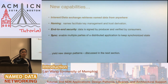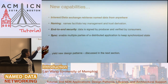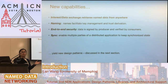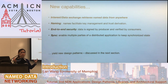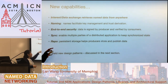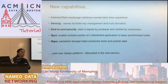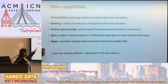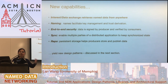We have a new transport layer abstraction called SVS. It enables multi-party data sharing instead of just two-way communication, supporting many consumers and many producers talking to each other. Another new capability is repo. Content caches in the network are opportunistic, but if you want permanent or persistent storage, repo can help producers store and publish data. This way the producer doesn't have to be online all the time — their data can be served by the repos.